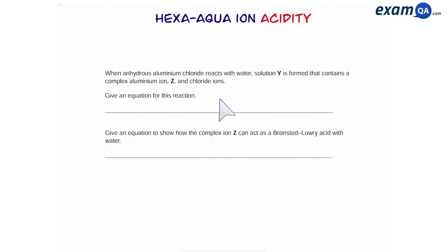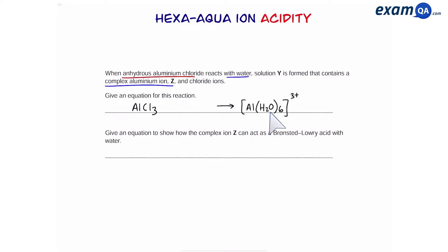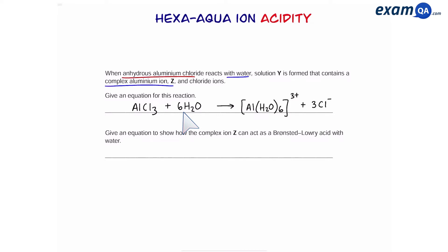Let's put this into practice. We're going to start with aluminium chloride anhydrous, which looks like this. It's going to react with water to form a complex aluminium ion — a hexa aqua ion: aluminium with six waters and overall charge three plus. Because we had three chloride ions on the left, all three have been removed and we have three chloride ions on the right. We have to put six waters on the left because it says it reacts with water, and we have six waters on the right.